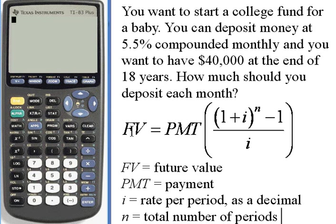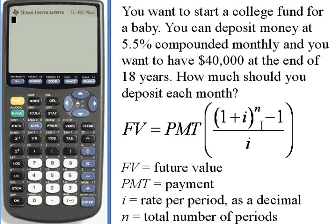We're going to use the future value formula. The future value formula says that the future value — the amount we want to end up with, in this case $40,000 — equals the payment amount (what we're looking for), times (1 + i), where i is the rate per period as a decimal, raised to the n power, where n is the total number of periods, minus 1, all divided by i.